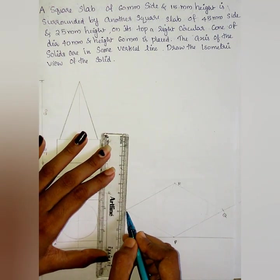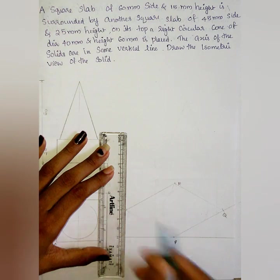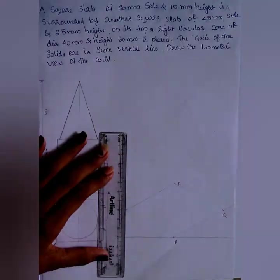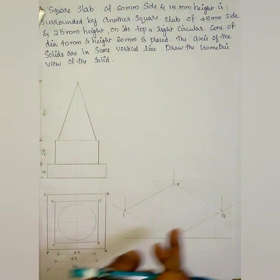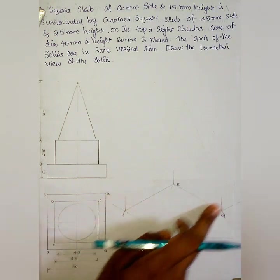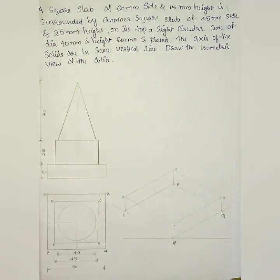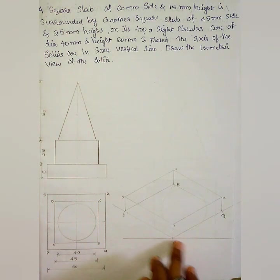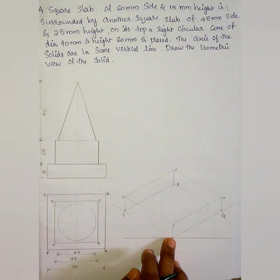Now we are at 15mm height. We have PQRS four points at this level. We join these four lines to complete the top face, and by joining all edges we get the first square slab of 60mm side and 15mm height completed.